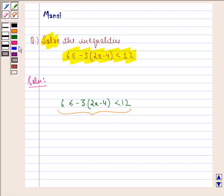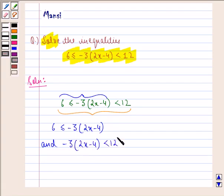They are 6 is less than equal to minus 3 into 2x minus 4 which is the first part. And minus 3 into 2x minus 4 is strictly less than 12. That is the second part.